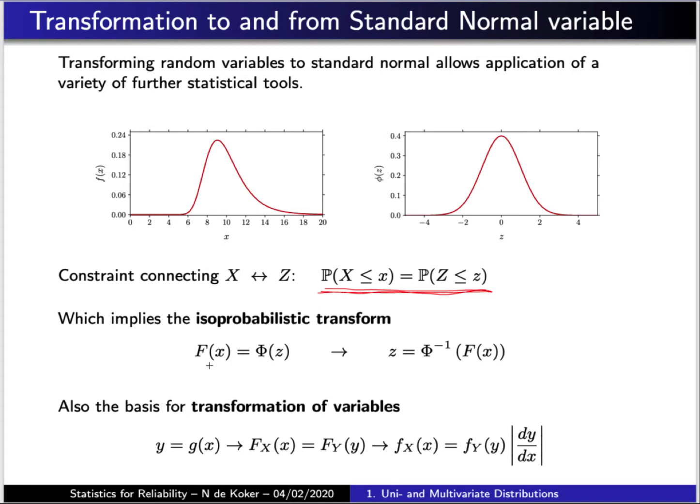What this requirement says in terms of the cumulative distribution function is that the CDF of x at a given value of x should be equal to the CDF of the standard normal variable at a given value of z. And from this, taking the inverse function, one can say that z is equal to the inverse of the CDF of the standard normal variable, with the argument being the CDF of x.